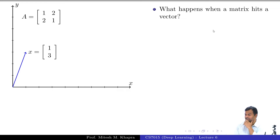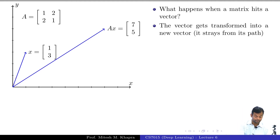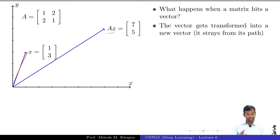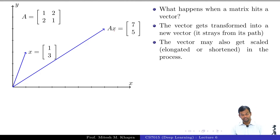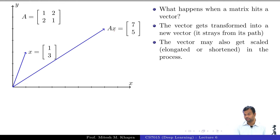What happens when a matrix hits a vector? It transforms it — traces it from its path. This is the original vector x. Once I multiply by Ax, I get a new vector, and two things happen: the direction changes, and in many cases the scale also changes — the vector might get elongated or its magnitude might decrease. Matrices are the real villains of linear algebra. A vector was minding its own business, and a matrix comes and completely changes its world.